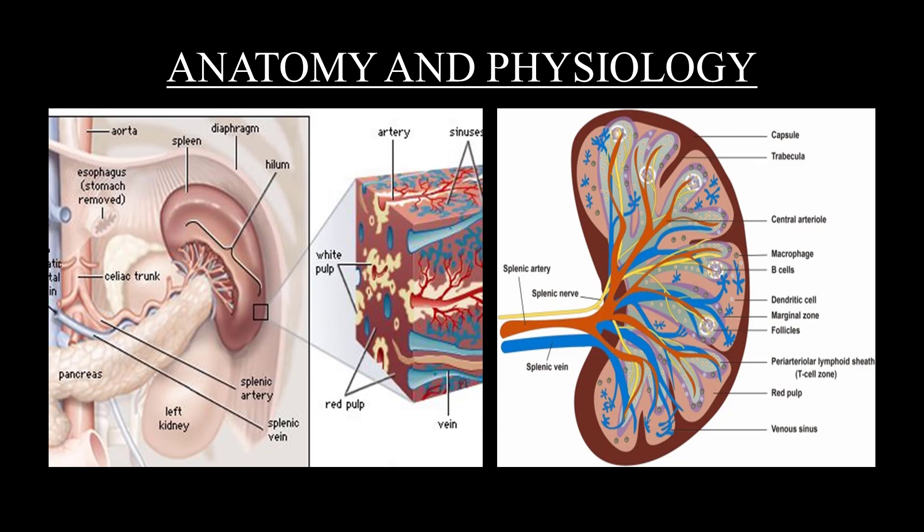More precisely, the spleen is located posterior to the stomach and anterior to the left hemidiaphragm, at the level of ribs 9, 10, and 11. Medial to the spleen is the left kidney. Superior is the diaphragm, while inferiorly it rests directly on the left colic flexure, the splenic flexure. The tail of the pancreas touches the spleen at the level of the hilum.